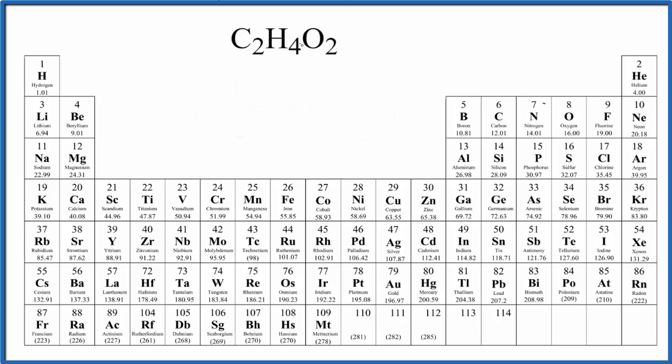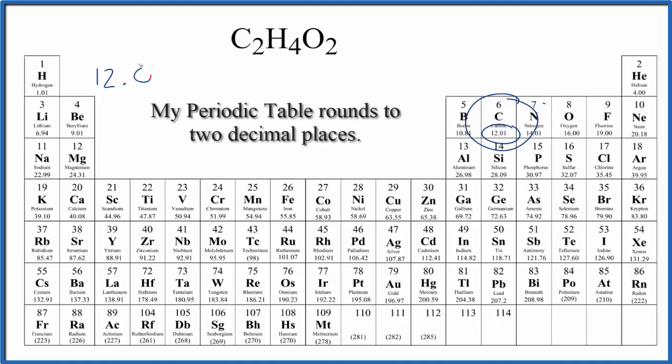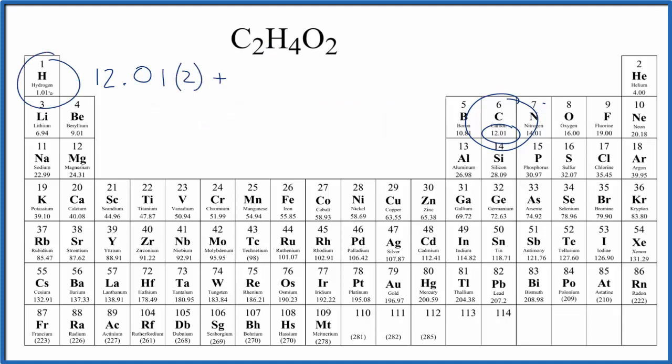So to find the molar mass here for acetic acid, we look for carbon right here on the periodic table, 12.01, and the units are grams per mole. I won't write that now. Let's write that at the end. Two carbon atoms, so we multiply that times two. Hydrogen, 1.01 units are grams per mole. We have four of those.